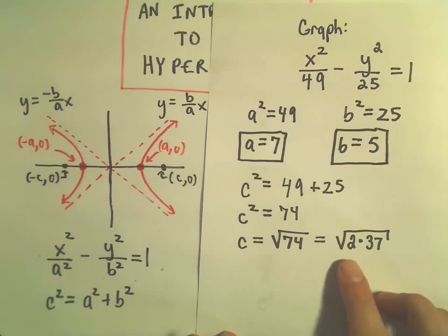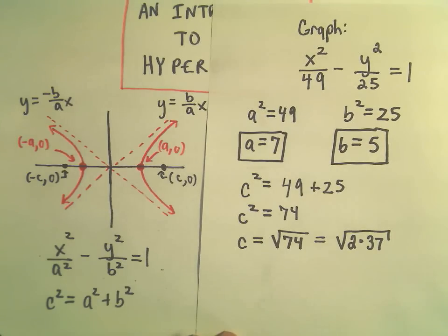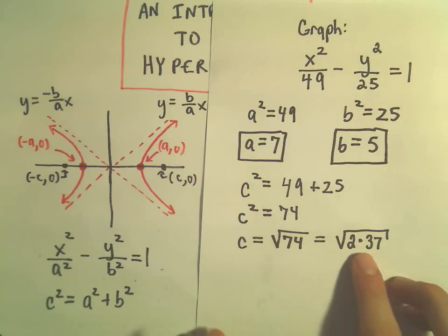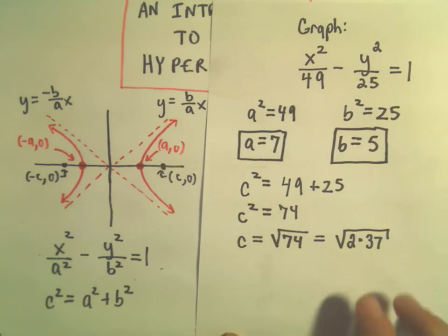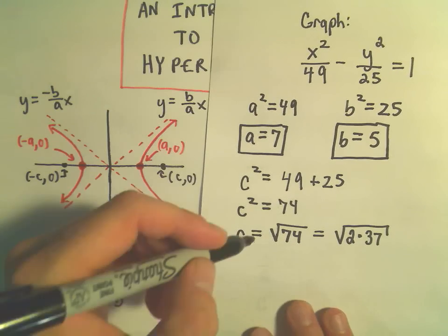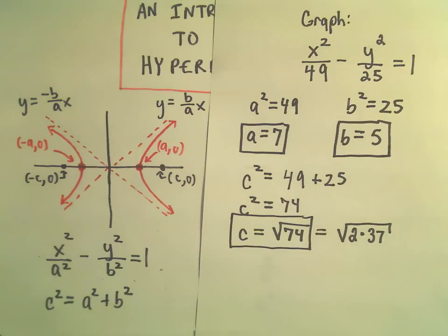That would give us 74. Well 37 is a prime number. So this really doesn't factor too much more. In fact it doesn't really factor. I mean you can always make it 37 times 1. But that's not going to help us break down the square root anymore. So I'm just going to use the c value of square root of 74.